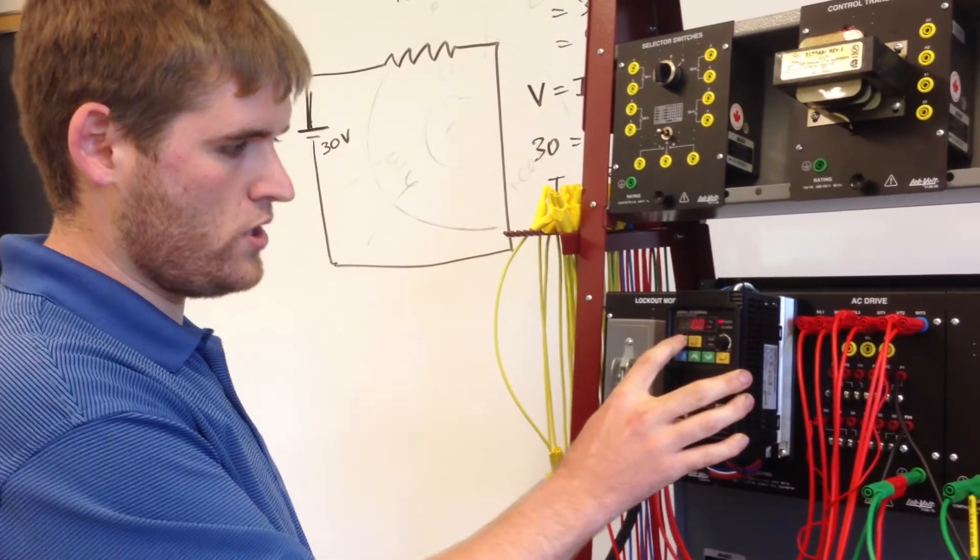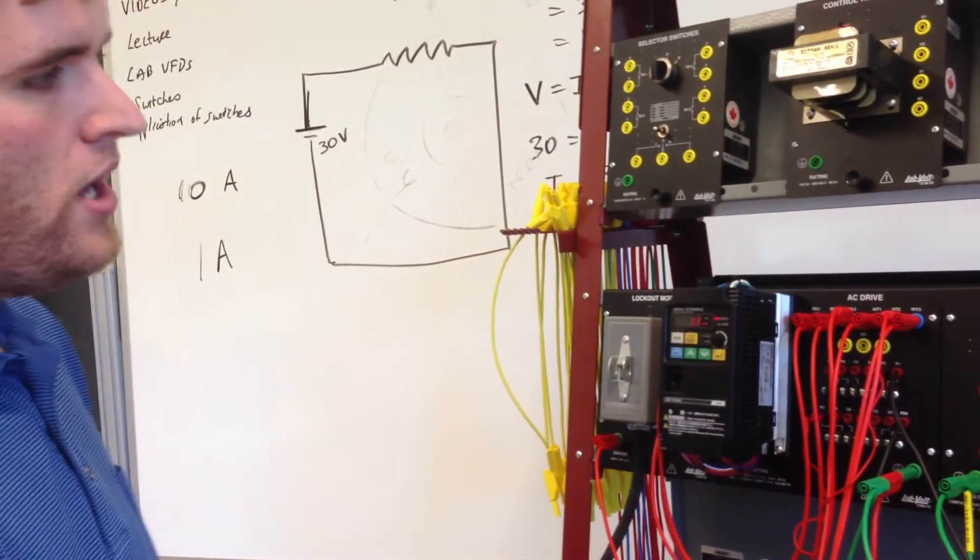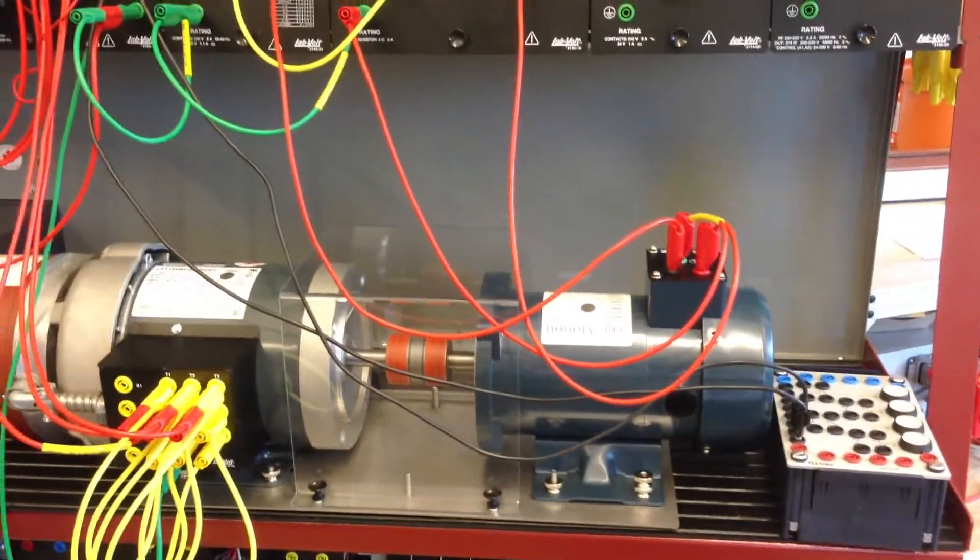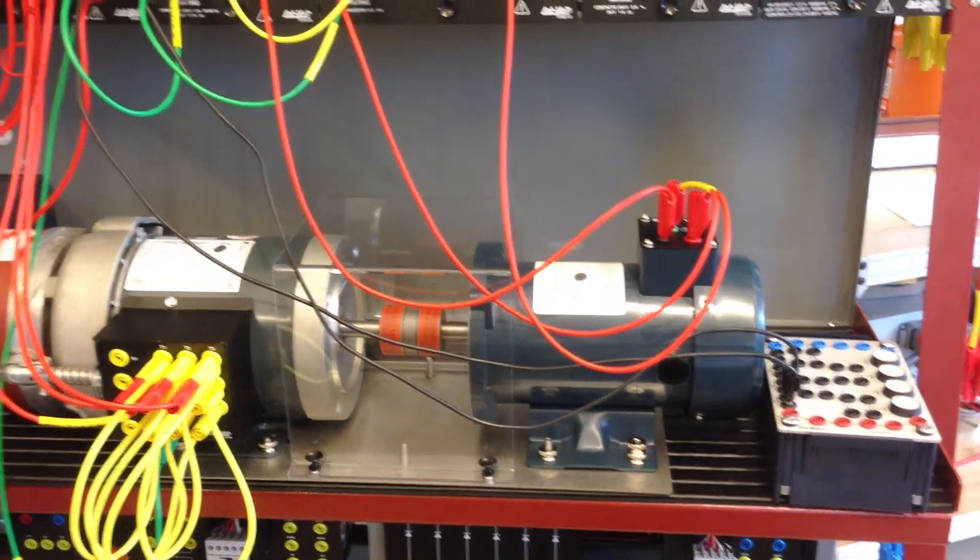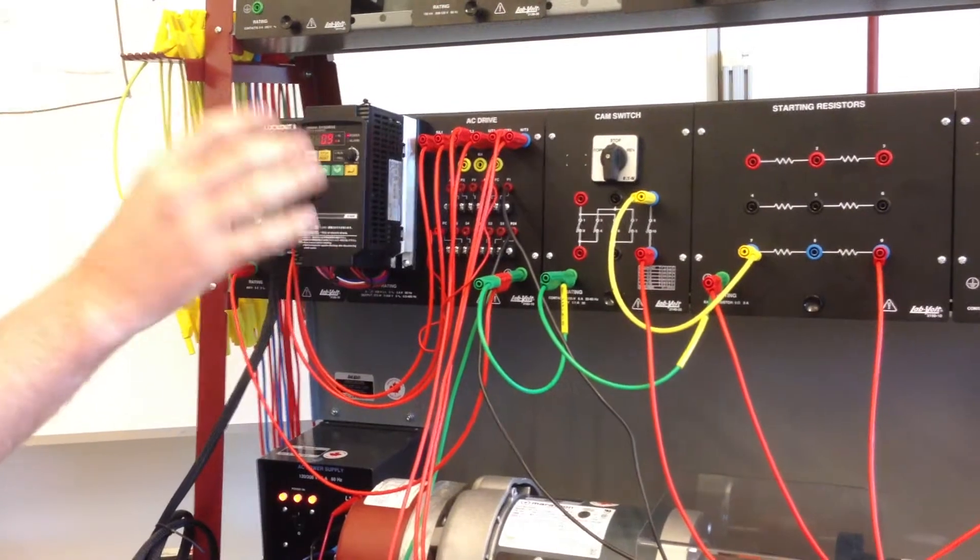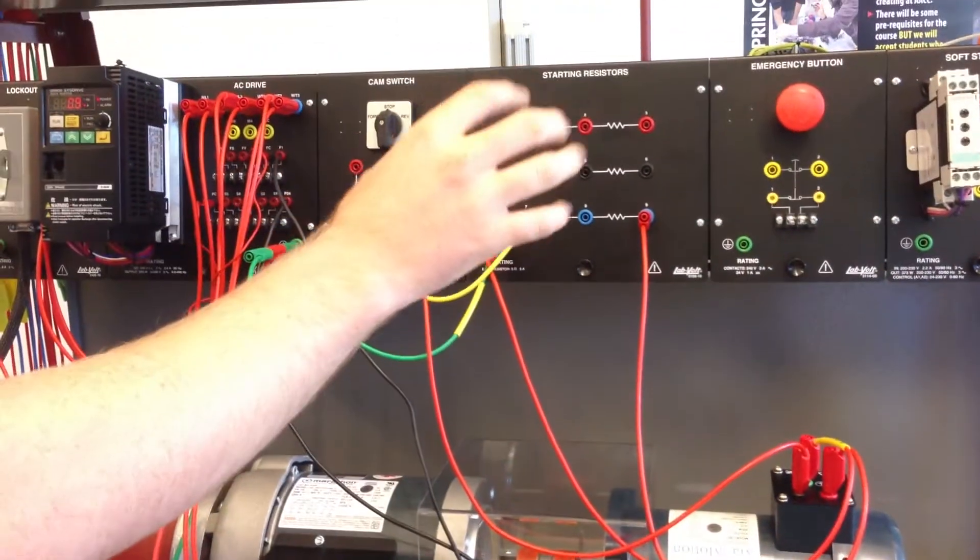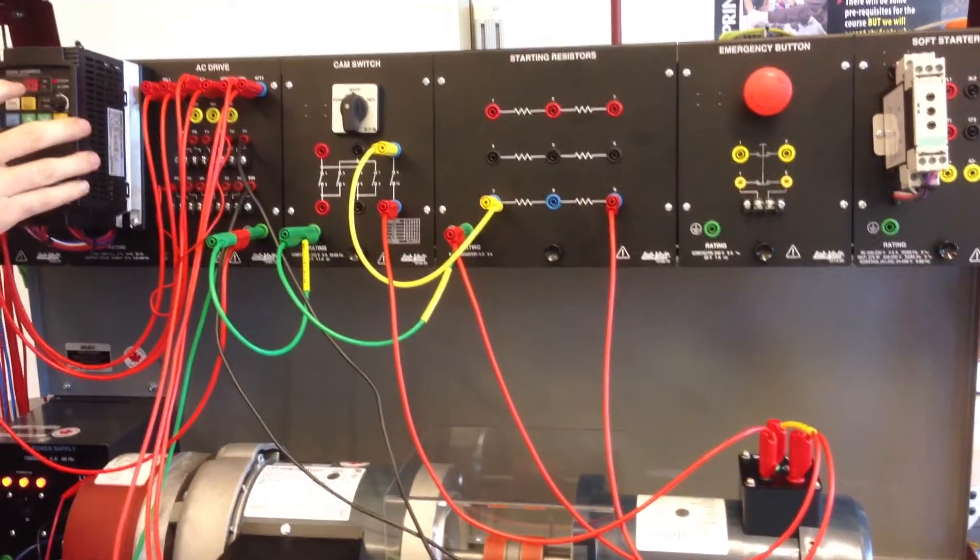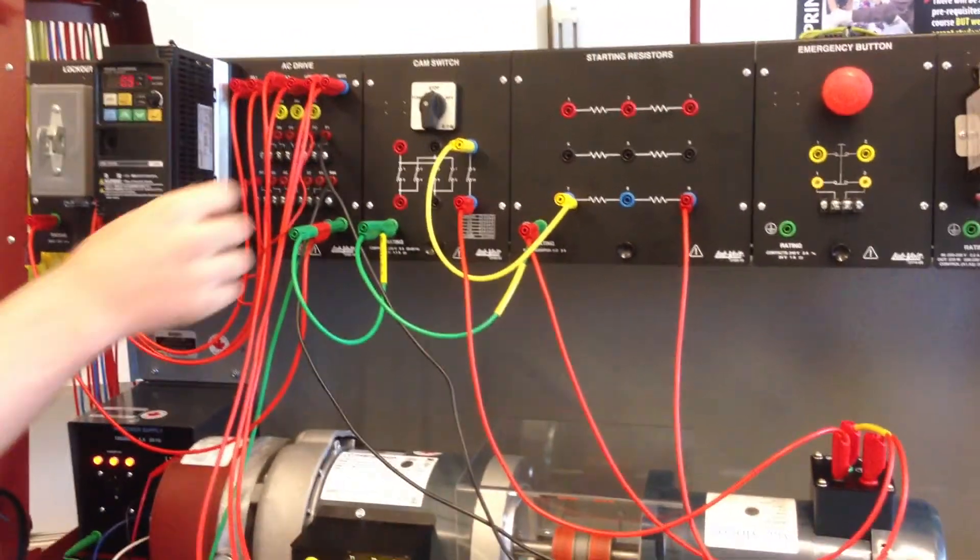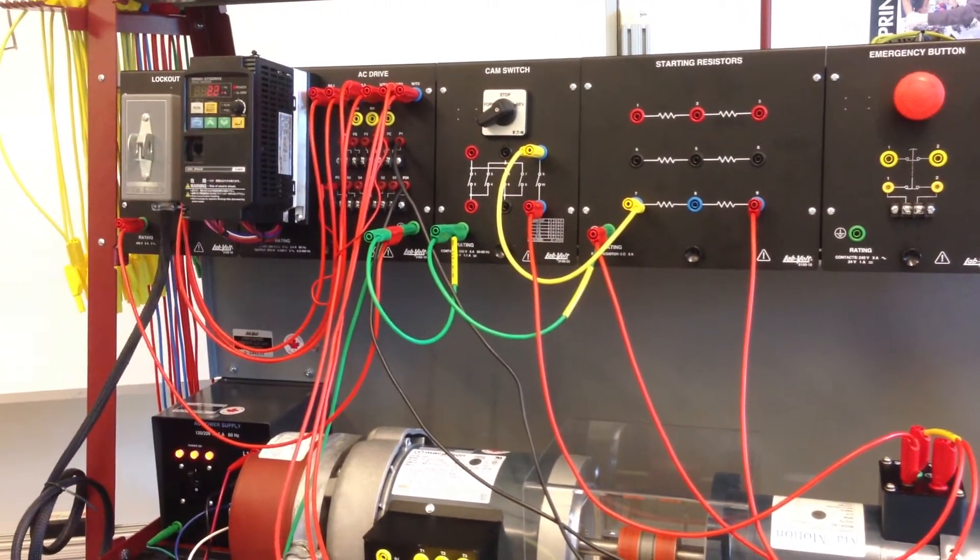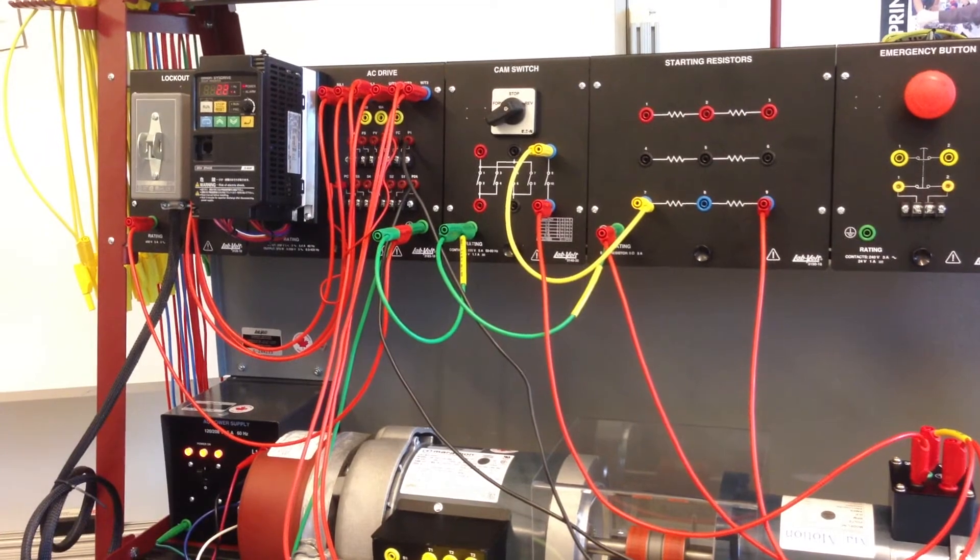Alright so let's go ahead and run this. And right now I have my cam switch set to stop so there's no load on the DC motor. So it's going to spin up to about 60 hertz which is the maximum our VFD can output. And you can see here that our draw is 0.9 amps. Now what I'm going to do is I'm going to switch my cam switch which is going to put this resistance on this DC motor. And then we're going to watch this amperage climb. Okay. And you see right now it's reading 2.2. Like I said my B22 setting is set to 2.1.